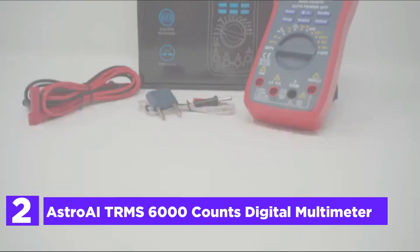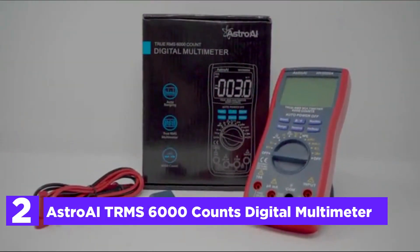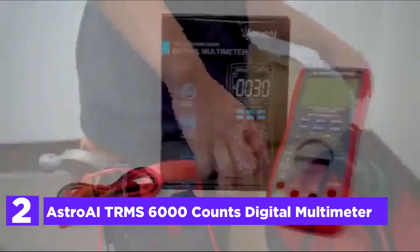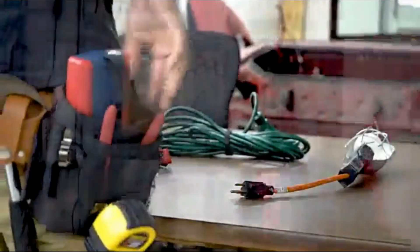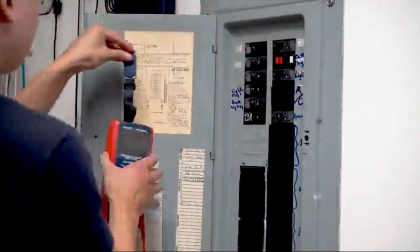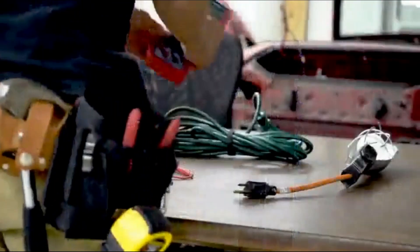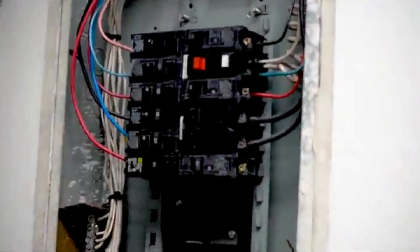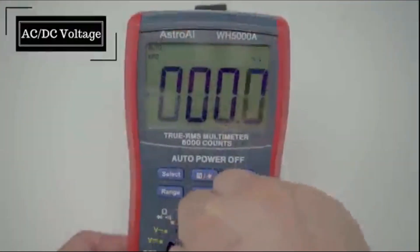Number 2 in our list, Astro-AITR-MS 6000 Counts Digital Multimeter. The Astro-AI True RMS Multimeter was made to be safe and precisely employed by professionals working in the workplace or by amateurs who require an extra boost of power than their typical digital multimeter. It's safe and easy to use with sophisticated tools that measure everything.